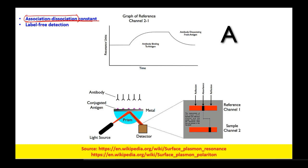We are interested in the interaction between two components — say component A and B — whether they are associating or dissociating, and if we change the environment whether that association can be maintained or there is a change resulting in the dissociation of the AB complex. Here we have a light source, then through the prism it is made incident onto the gold layer, and we capture the reflected light using the detector.